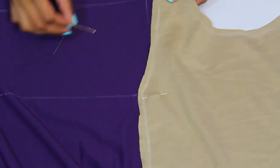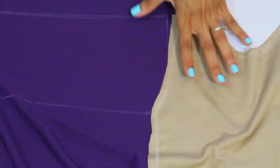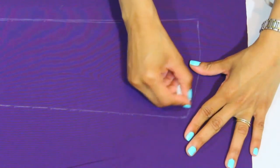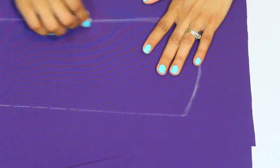Alright, so move the top away from your sleeve. Here I'm just making my lines a little bit darker so that way I can see them when I sew.